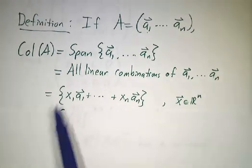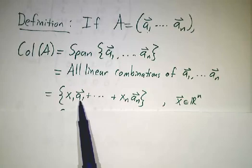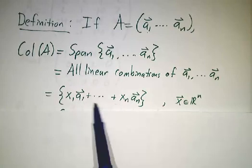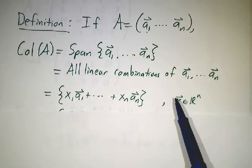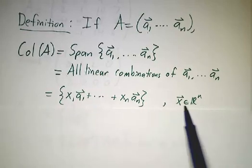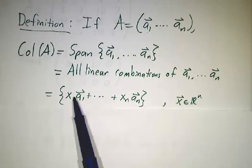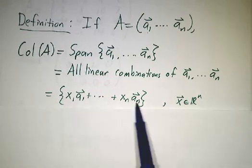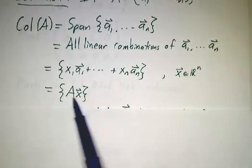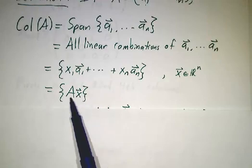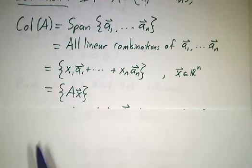How do you take a linear combination? You take an arbitrary number x1 and multiply by the first column, x2 times the second column, xn times the nth column. In other words, you pick an arbitrary vector in Rn to give you coefficients and take the linear combination. But that's exactly what the product of a matrix Ax is. So the column space is all the things that can be expressed as A times x.